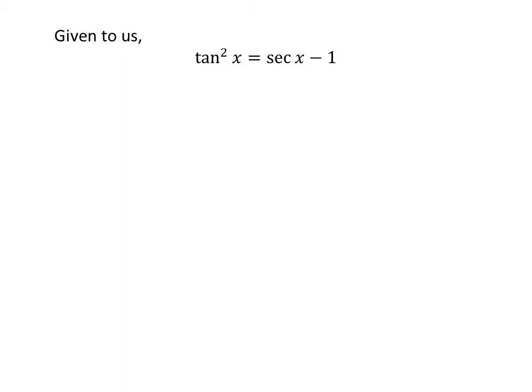Given to us, tan²x equals sec x minus 1. Moving sec x minus 1 from the left hand side to the right hand side gives us tan²x minus sec x plus 1 equals 0.